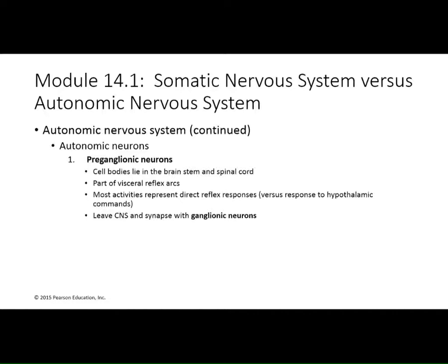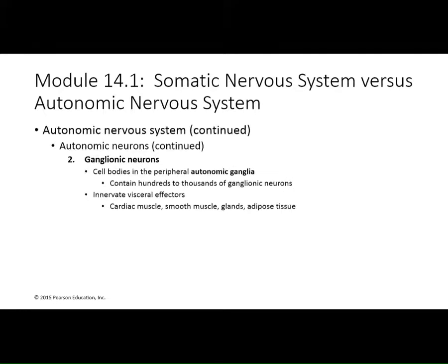The pre-ganglionic neuron leaves the CNS and synapses with a post-ganglionic neuron, which then carries information to the effector. For the autonomic nervous system, the effectors are not skeletal muscle but instead cardiac muscle, smooth muscle, glands, and — added to the list — adipose tissue. There's a lot going on in fat tissue that is just now beginning to be understood.